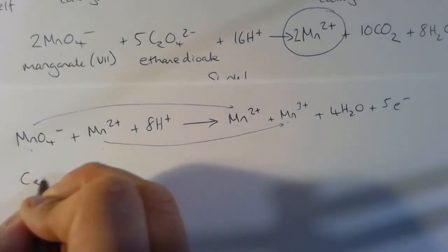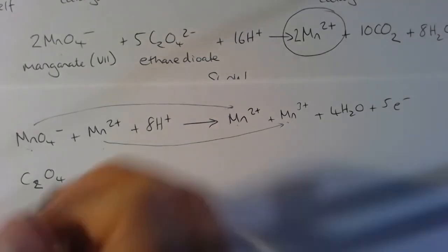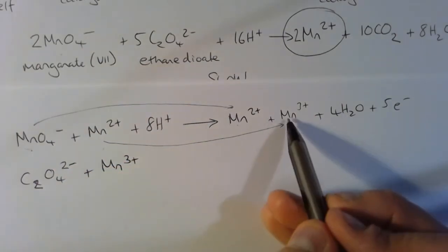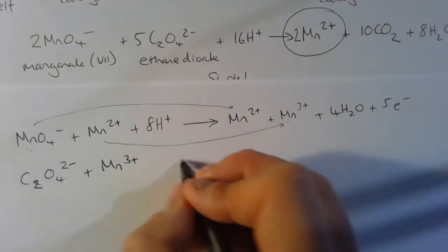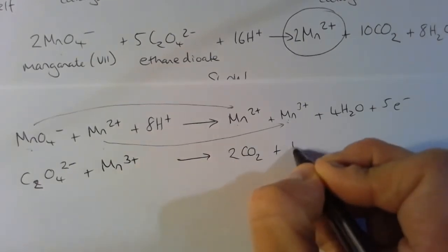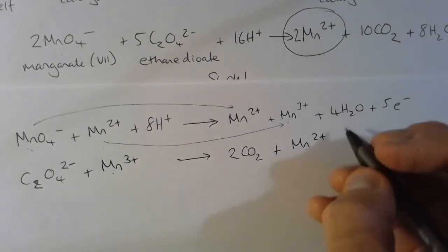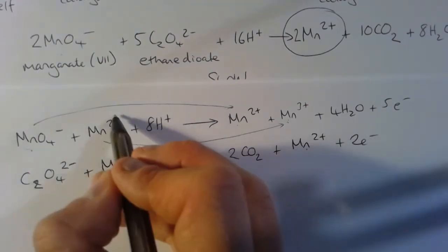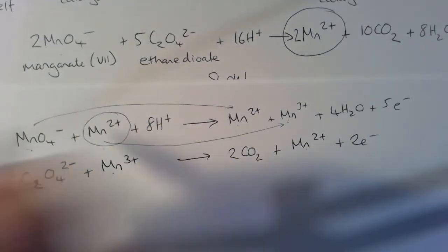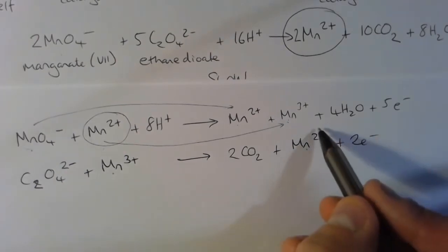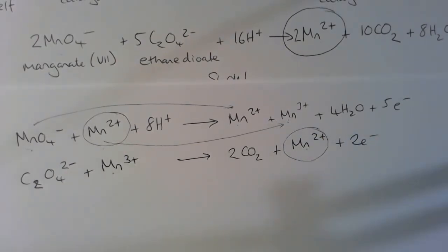There's a second step to this reaction. So here is our ethanedioate or oxalate ion. This will also then react actually with the Mn³⁺ that has been produced in the previous step, and it will reduce the Mn³⁺ back to Mn²⁺. So our autocatalyst is Mn²⁺; in step 1 it's a reactant, and in step 2 it's a product. So we can see that overall it hasn't changed in the reaction.